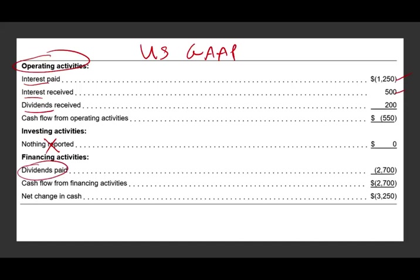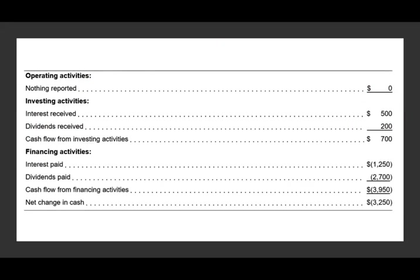If we switch from GAAP to IFRS, since we are not told this company is a financial institution, interest paid cannot be operating — it has to be financing, as this is how you finance your business. Interest received, because you received it from lending money, is investing. Dividend received is also part of your investments, so it is investing too. Those three items are removed from operating: interest received and dividend received go to investing, and interest paid goes to financing.